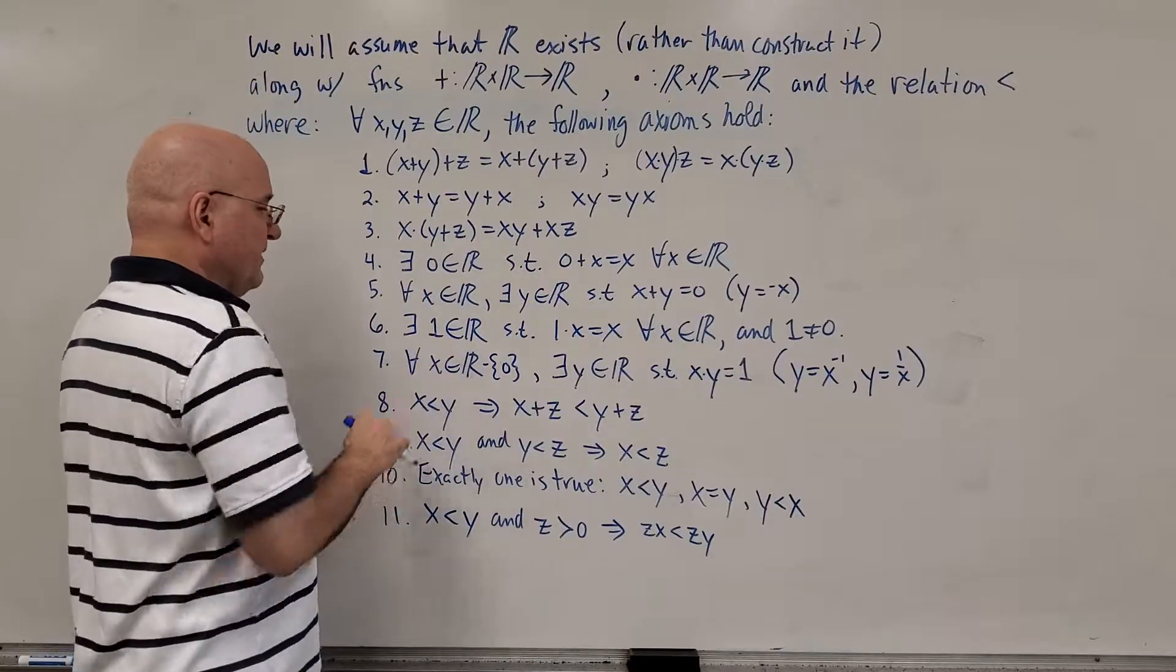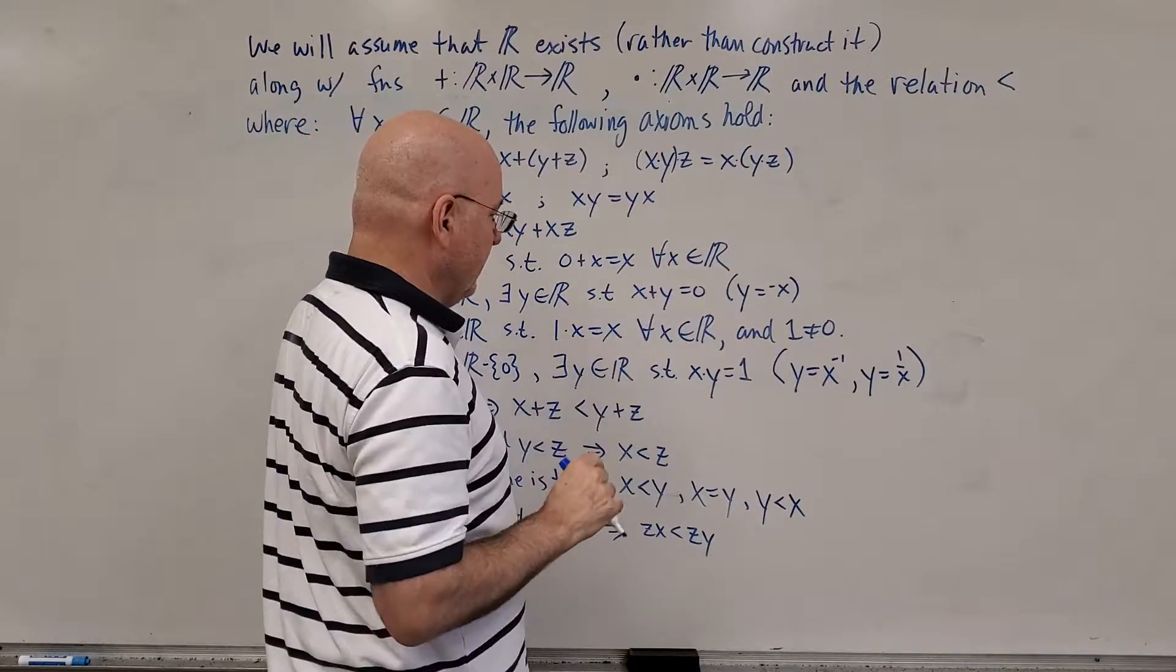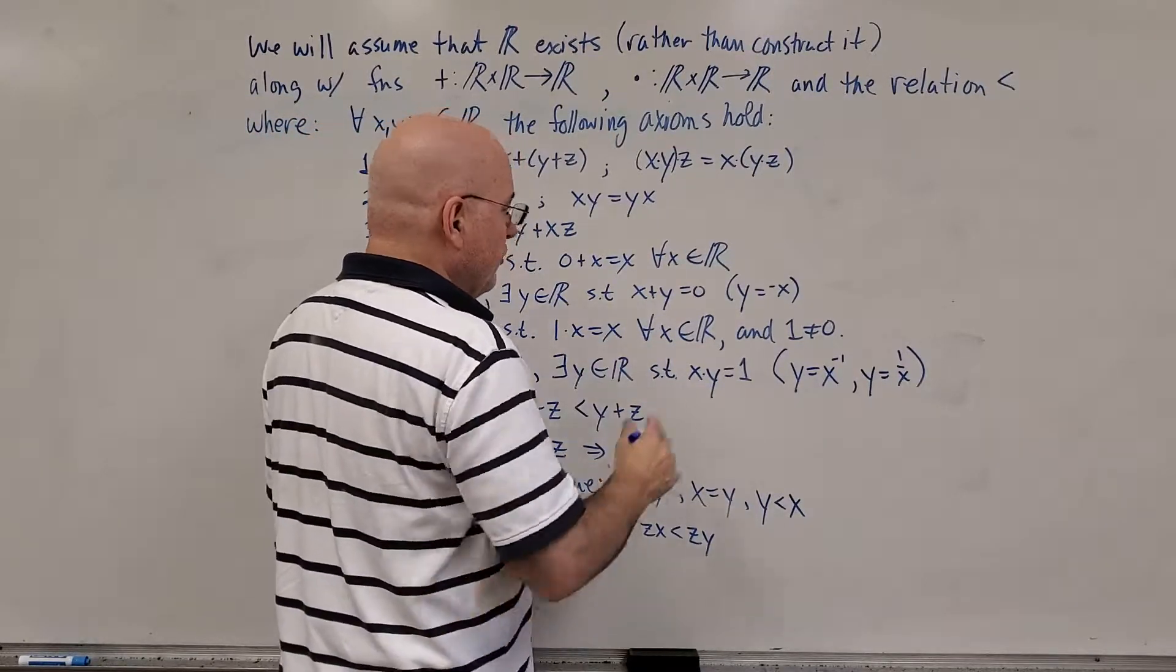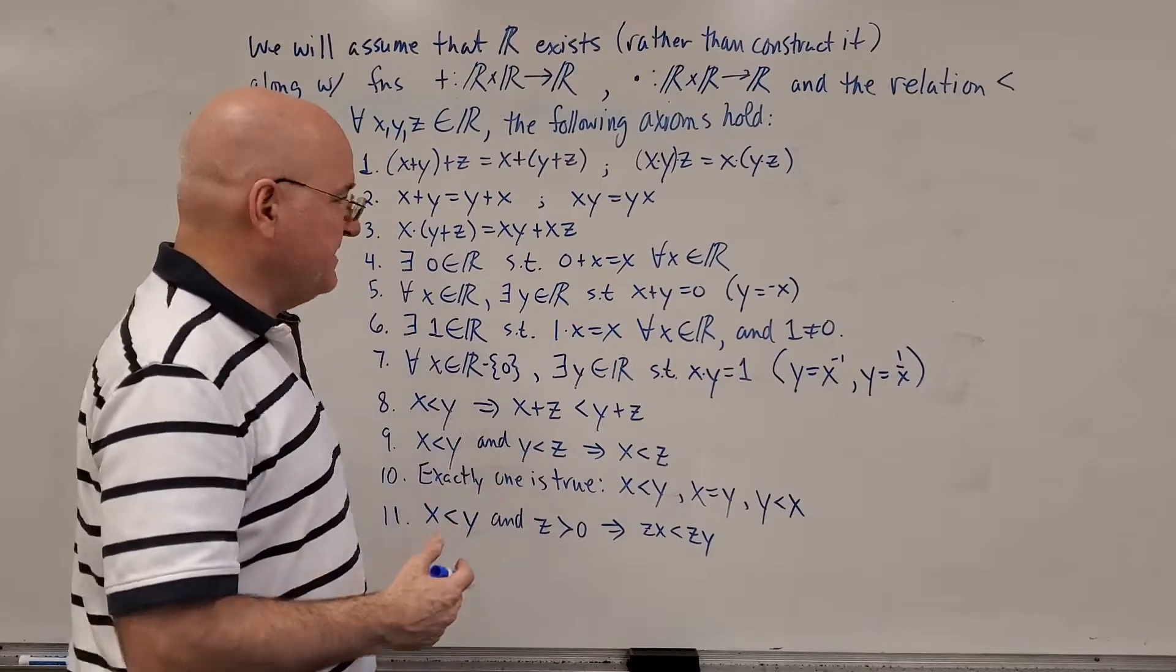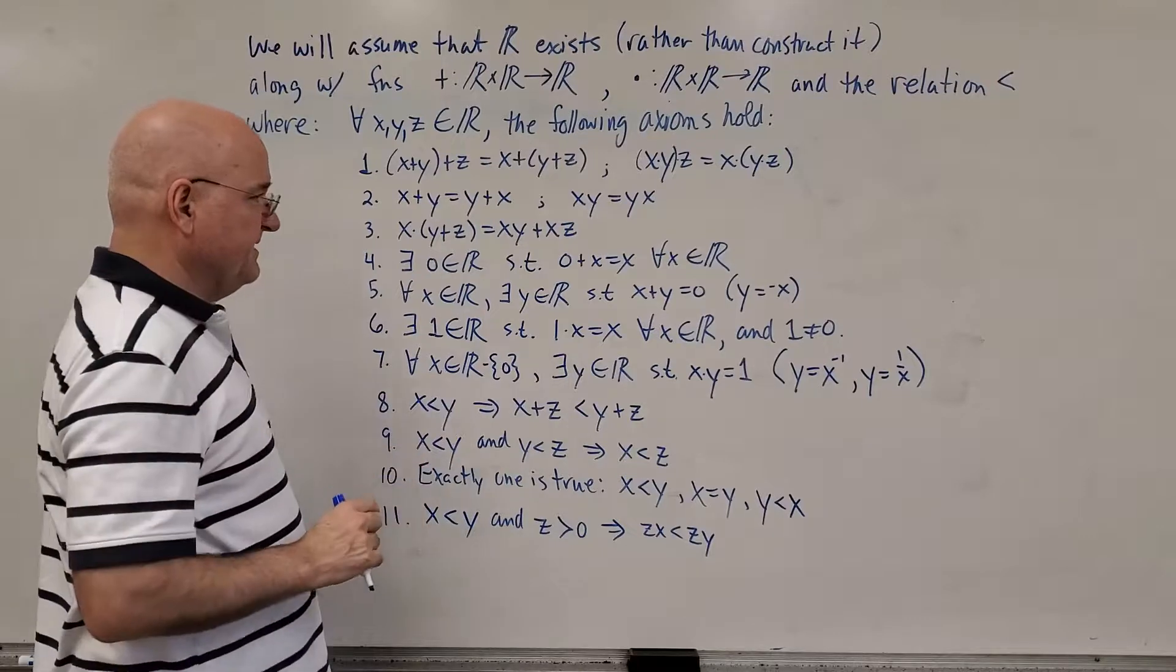There's also a number one in the real numbers, such that one times x is equal to x for all x in the real numbers, and one is a different number from zero.